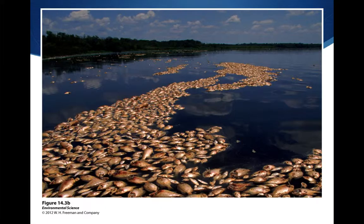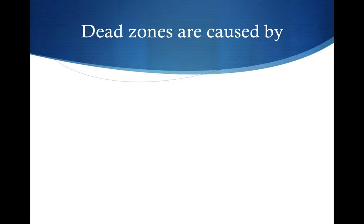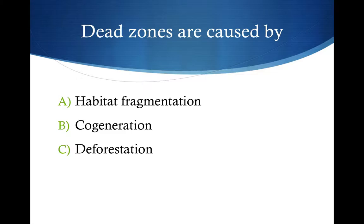Fish kills occur when dissolved oxygen drops so low that fish cannot survive. You can see dead fish floating in the water because the dissolved oxygen concentration fell below survivable levels. Dead fish then increase the biochemical oxygen demand further, as decomposers now have even more material to break down — creating a self-perpetuating cycle that causes major problems for the entire aquatic ecosystem.